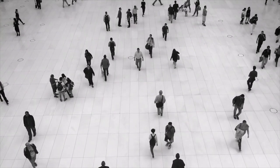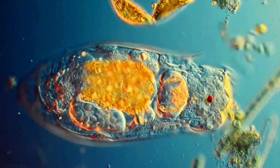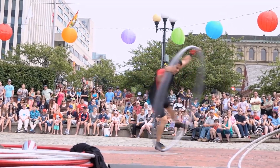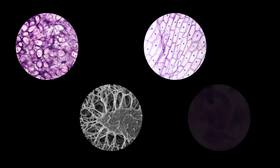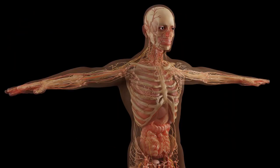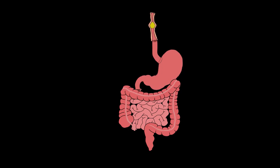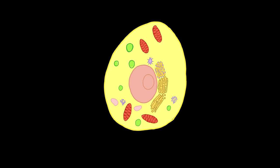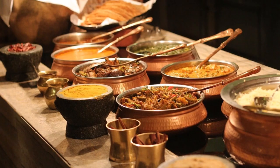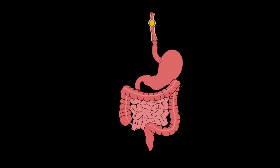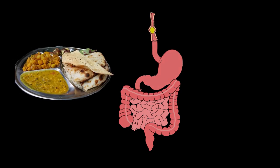Our body is made of many cells, so we are multicellular organisms. Unlike unicellular organisms where one cell does everything — digestion, respiration, excretion — our body has specialized cells forming different tissues and organs that work together smoothly. Our body needs nutrients like glucose, amino acids, fatty acids, vitamins, and minerals. But our food is complex, so our digestive system helps break this complex food down.